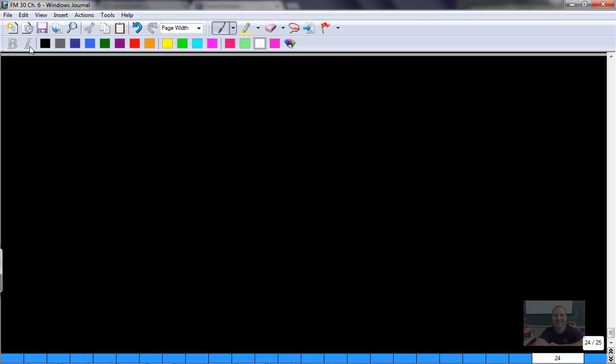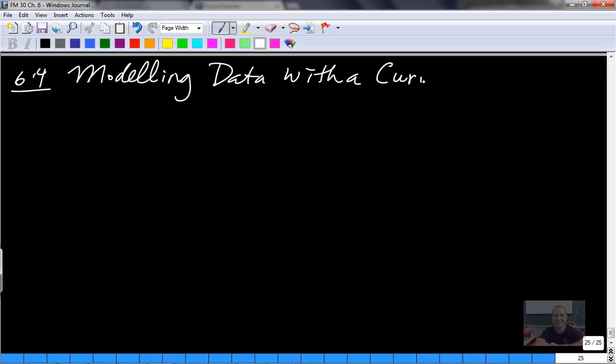All right, so this lesson is 6.4 in your textbooks, and of course your textbook is Foundations of Math 12 by Nelson, and the title of this particular lesson is Modeling Data with a Curve of Best Fit.